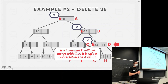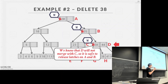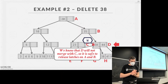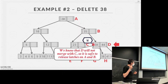A student asks whether the order of releasing latches matters. Since all threads traverse top-down, there are no deadlocks — it's a single direction. However, it is more efficient to release latches from top to bottom (first-in, first-out) so that other threads can enter from the root sooner, enabling more concurrency on the other side of the tree.